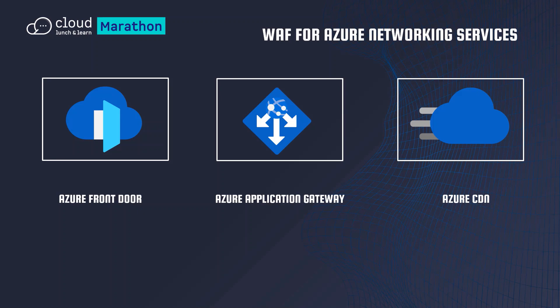Now we will discuss WAF for Azure networking services. Azure Web Application Firewall can be deployed with Azure Application Gateway, Azure Front Door, and Azure Content Delivery Network service from Microsoft. WAF has features that can be customized for each specific service. Both Application Gateway and Front Door can be used to terminate HTTP and HTTPS and load balance across backend servers. The key difference is that Front Door is a global service while Application Gateway is a regional service, meaning Front Door lets you manage global routing across regions.